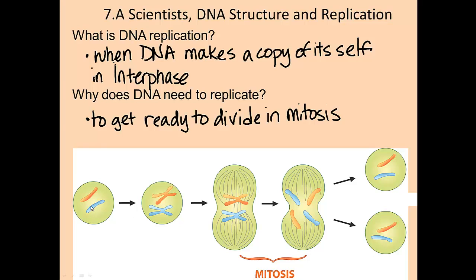Why does DNA need to replicate? When you go through mitotic division — where you take the chromosomes, move them to the middle, and split them apart — you end up with one copy of each. And if you try to go through mitotic division again, you're going to get two non-viable cells.